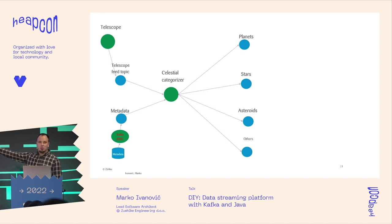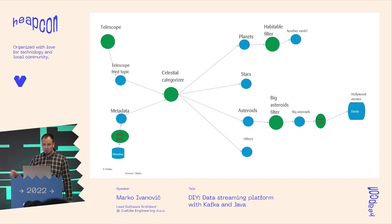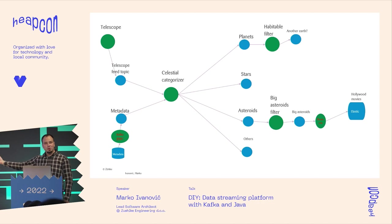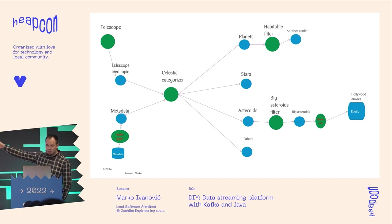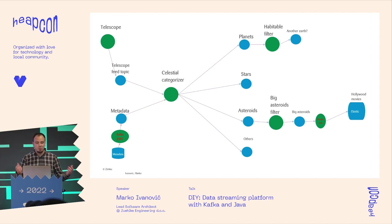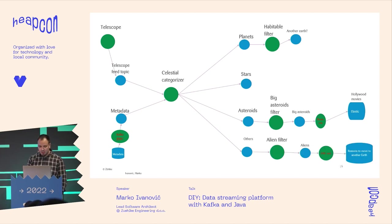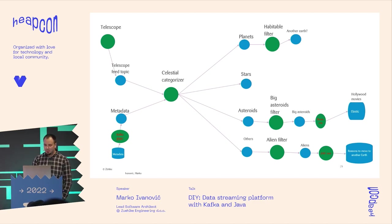To summarize: we had a telescope feed source, a metadata source, and a categorizer that created new topics — that's your platform. From here you can produce data to clients and deliver value. For example, filter big asteroids to figure out threats, use planet data to look for habitable worlds, or if we detect aliens, start storing reasons why we should move from Earth. And that's it from my side!